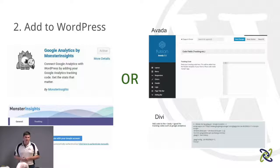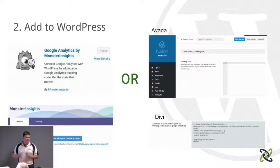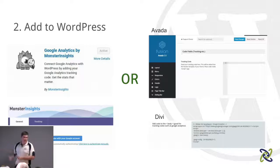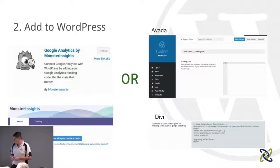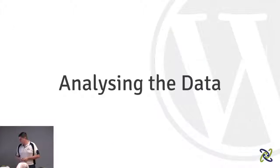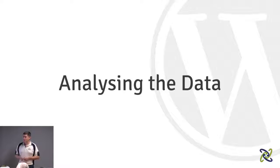If you've got a pre-existing paid theme like Avada or Divi, they normally have a section where you can add that code in. Avada has a nice field to add your tracking code, and Divi gives you a spot to copy the code in. Google gives you that code to copy and paste in. That's all it takes to get set up and start analysing who's visiting your site and where they're coming from.